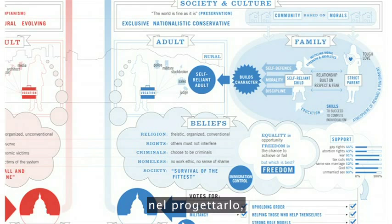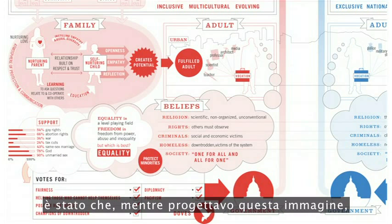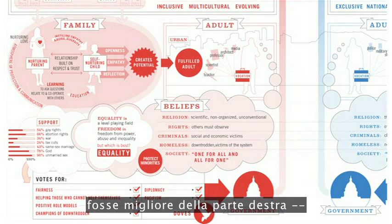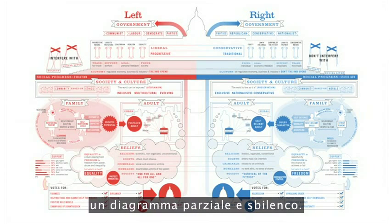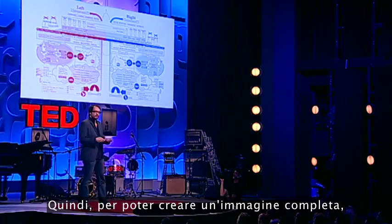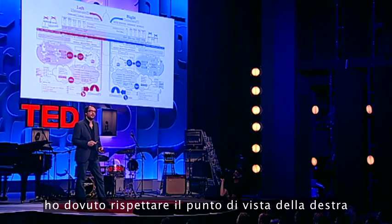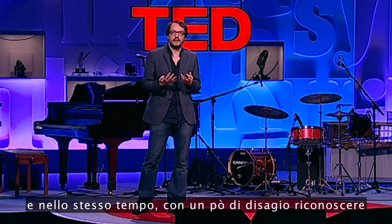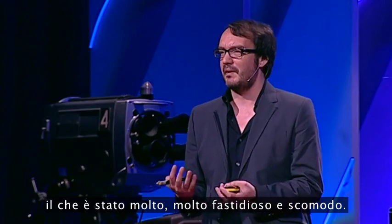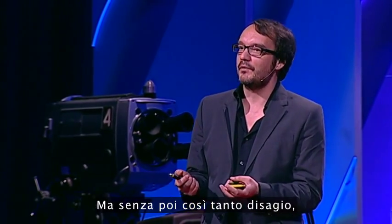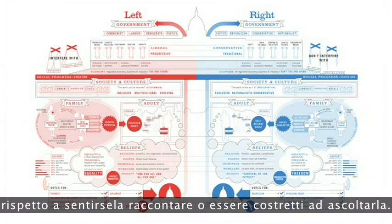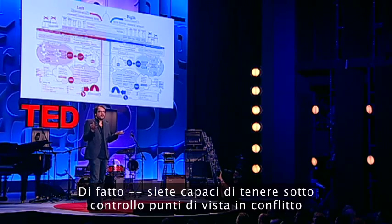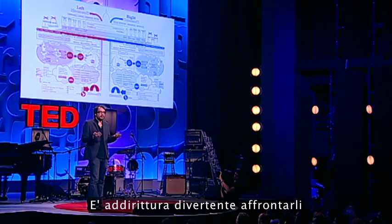And what was most exciting for me designing this was that I desperately wanted the left side to be better than the right side, being a kind of left-leaning journalist. But I couldn't, because I would have created a lopsided biased diagram. So in order to really create a full image, I had to honor the perspectives on the right-hand side, and at the same time uncomfortably recognize how many of those qualities were actually in me. But it's not too uncomfortable, because there's something unthreatening about seeing a political perspective versus being told or forced to listen to one. You're actually capable of holding conflicting viewpoints joyously when you can see them — it's even fun to engage with them because it's visual.